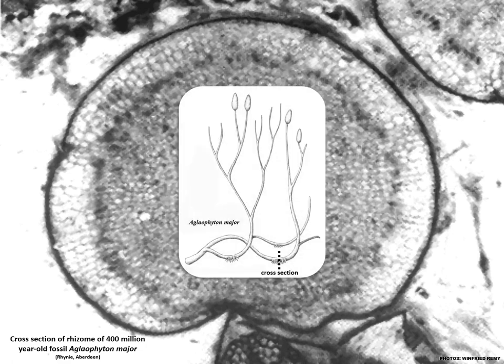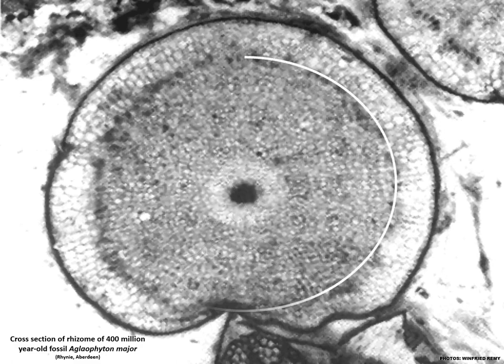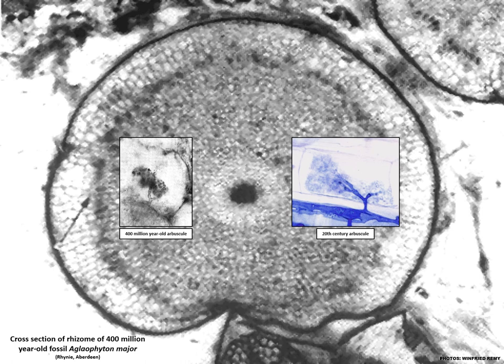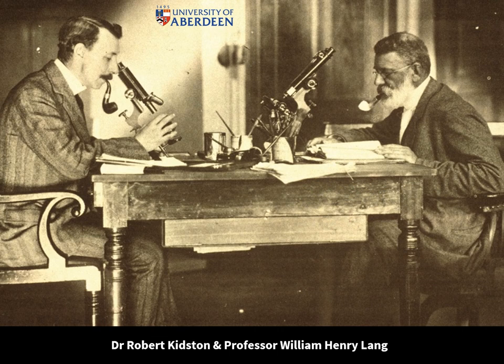We're dealing with the most ancient of several mycorrhizal symbioses: arbuscular mycorrhiza, which we know from fossil evidence and DNA studies co-evolved with land plants some 400 million years ago. Here's a cross-section of a plant fossil from the Devonian period proving that mycorrhiza evolved along with the very earliest of the land plants. The white ring shows where the fungus has occupied the rhizome tissue. The arrow is pointing to one of many ancient arbuscules — highly branched organelles inside root cells where nutrients are exchanged between the plant and its fungal partner.